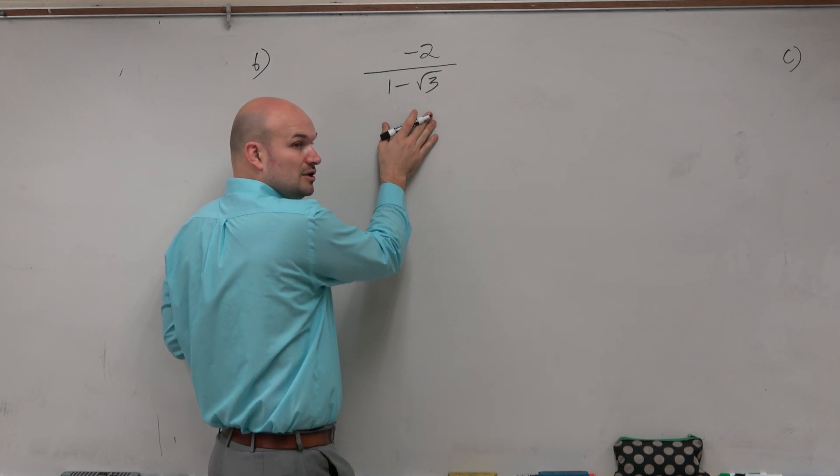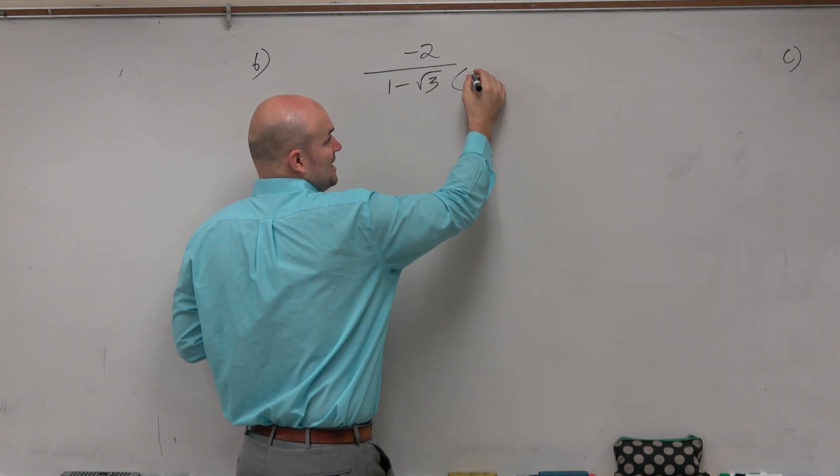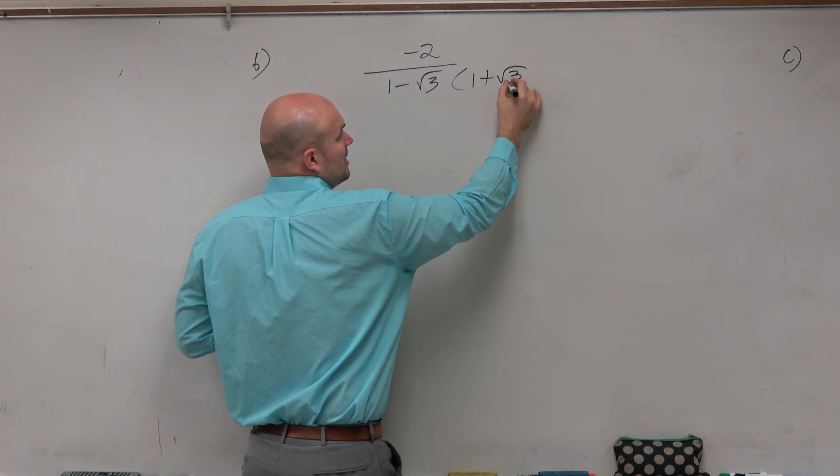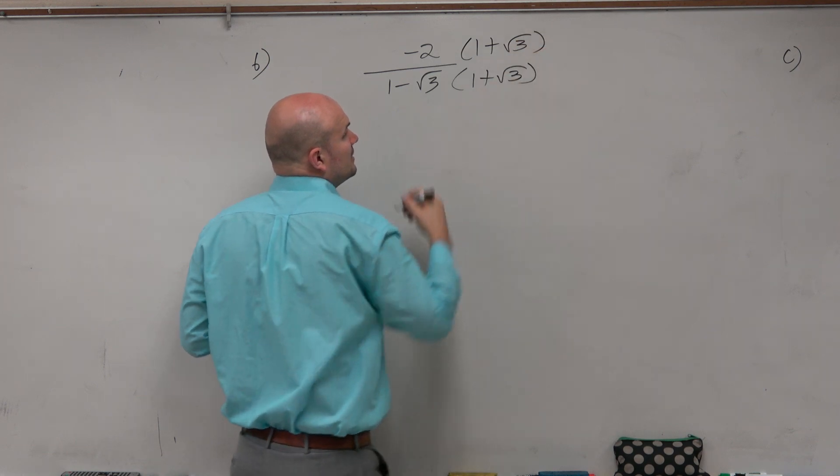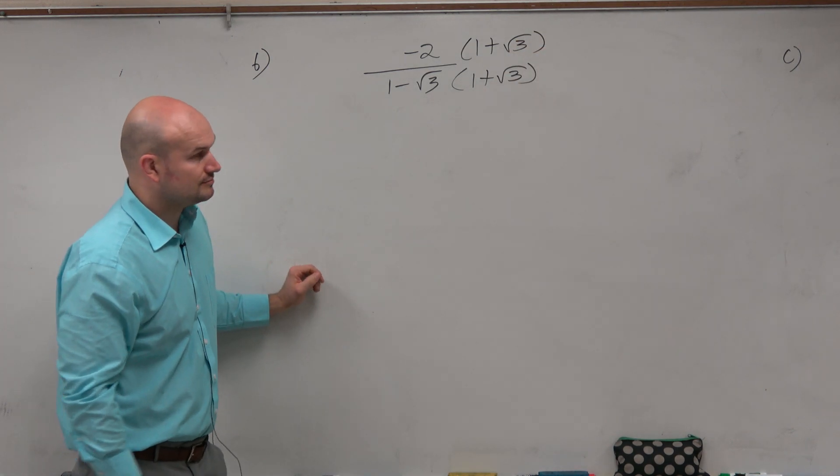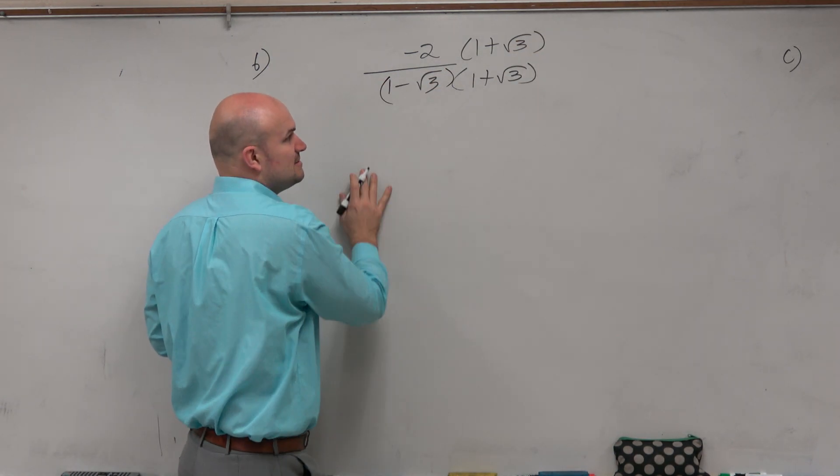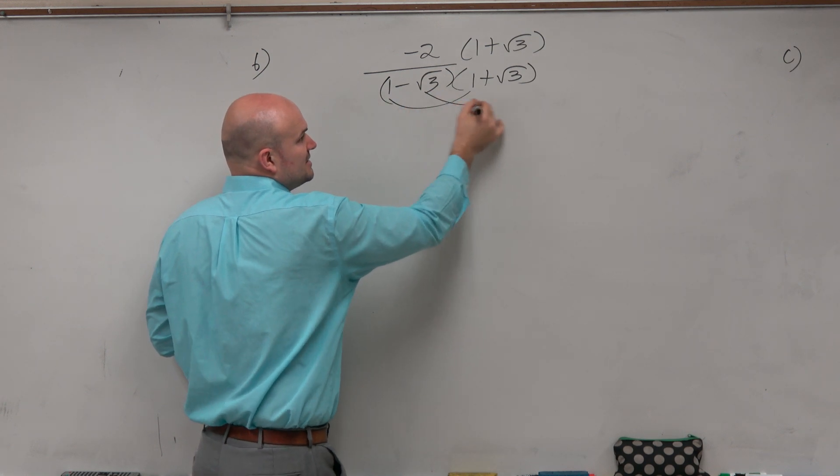So what we're going to want to do is get the radical off the denominator by rationalizing the denominator. But instead of multiplying by the square root of 3, we're going to multiply by the conjugate. And what's nice about this is you just apply the difference of two squares.